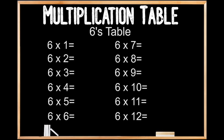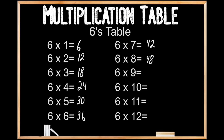6's table. 6 times 1 is 6. 6 times 2 is 12. 6 times 3 is 18. 6 times 4 is 15. 6 times 4 is 20. 6 times 5 is 30. 6 times 6 is 36. 6 times 7 is 42. 6 times 8 is 48. 6 times 9 is 54. 6 times 10 is 60. 6 times 11 is 66. And 6 times 12 is 72.